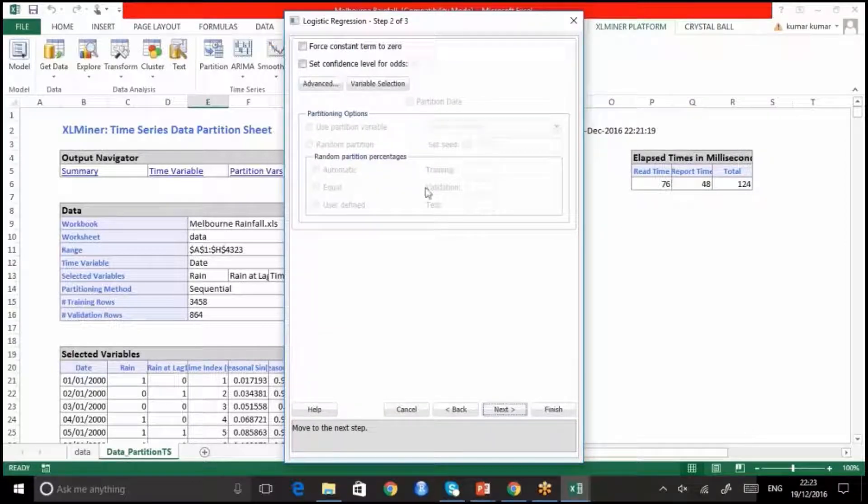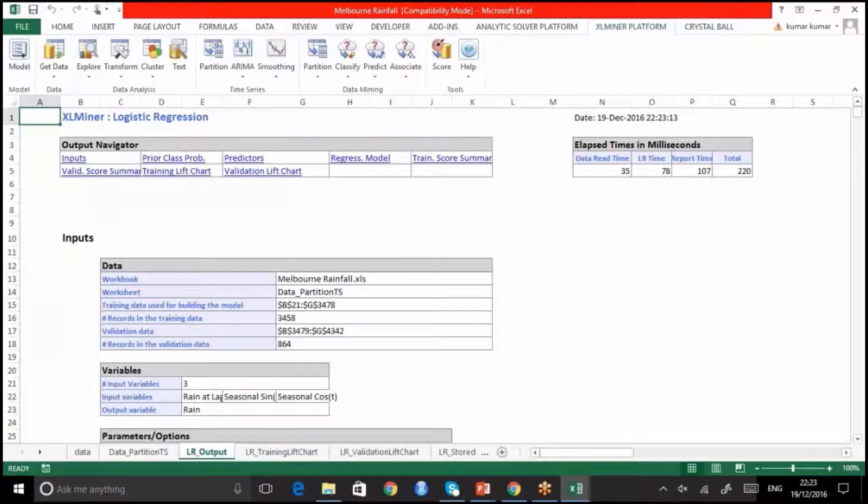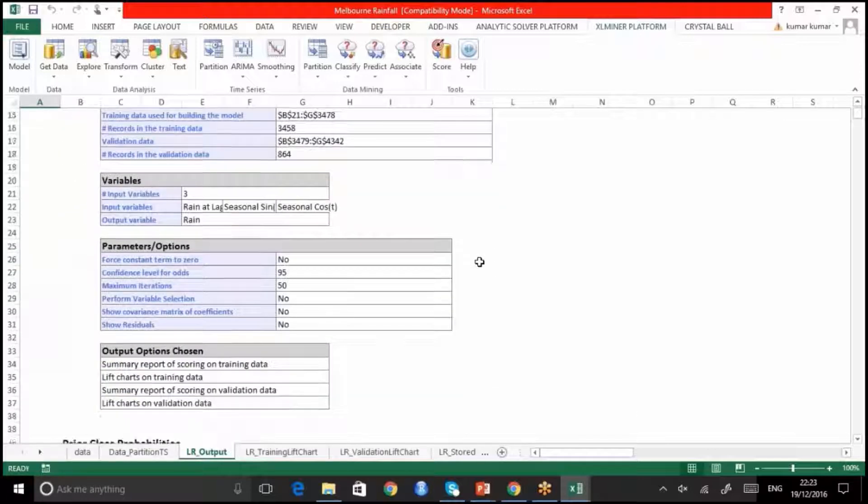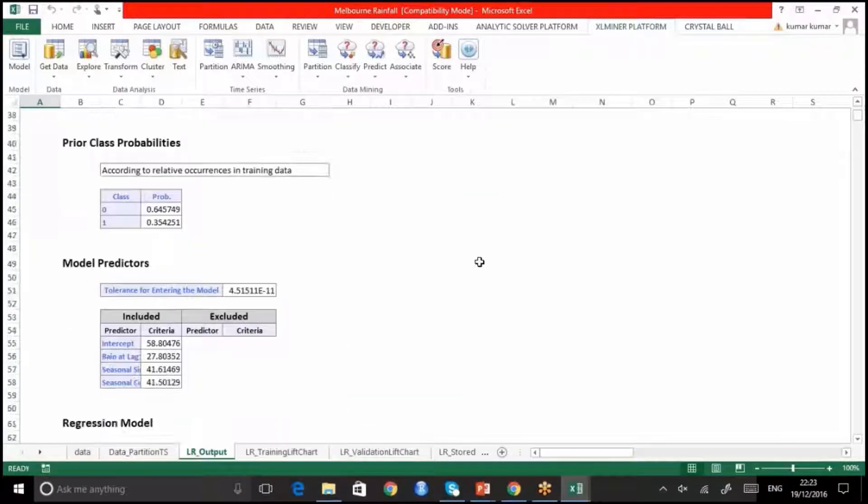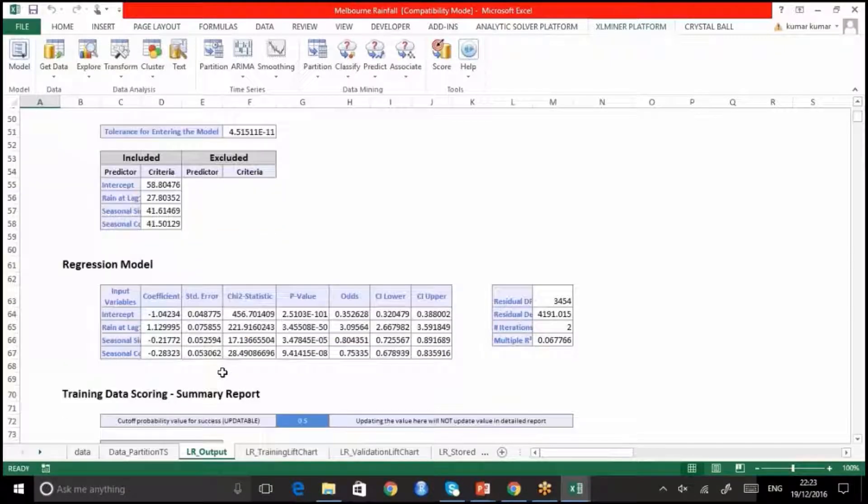Let me click on next. We need not make any changes here. We'll just click on finish. I'm waiting for the output to appear here. Now, in this output, you have these values.